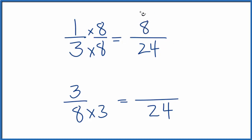1 times 8 is 8. Then here, I need to multiply the top by 3. So I'm multiplying by 1 again, because 3 over 3 is equal to 1. 3 times 3 is 9. So now I have the same denominator. I can compare the numerators and see which fraction is larger.